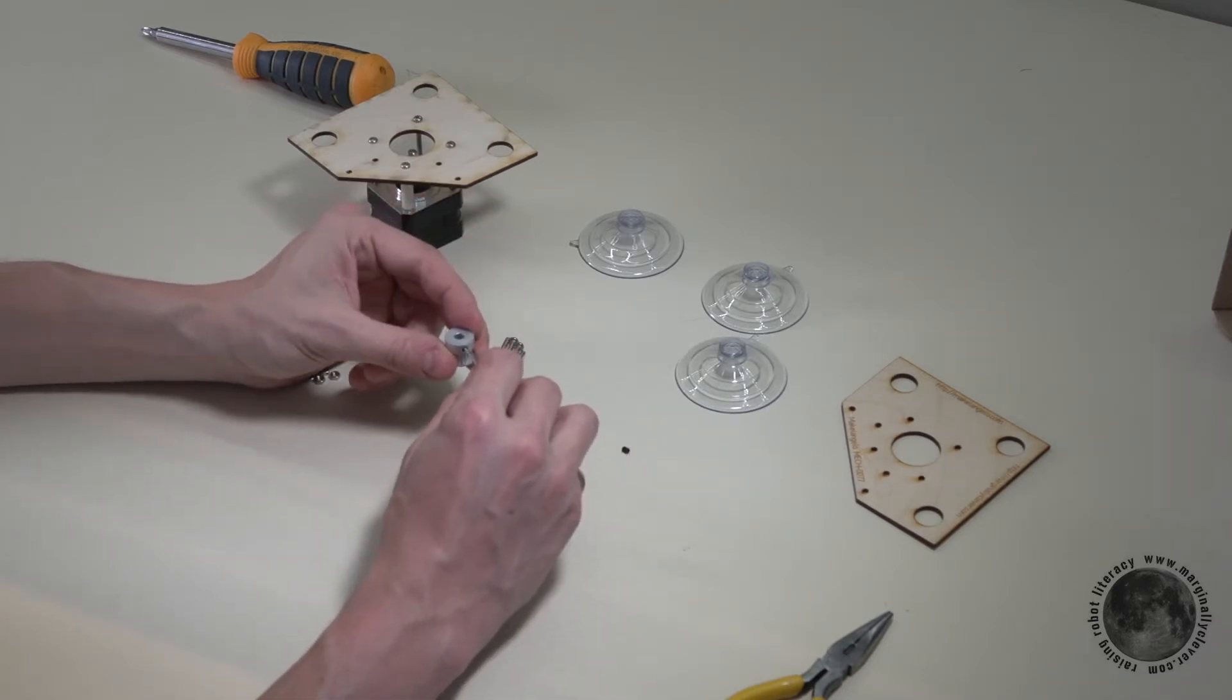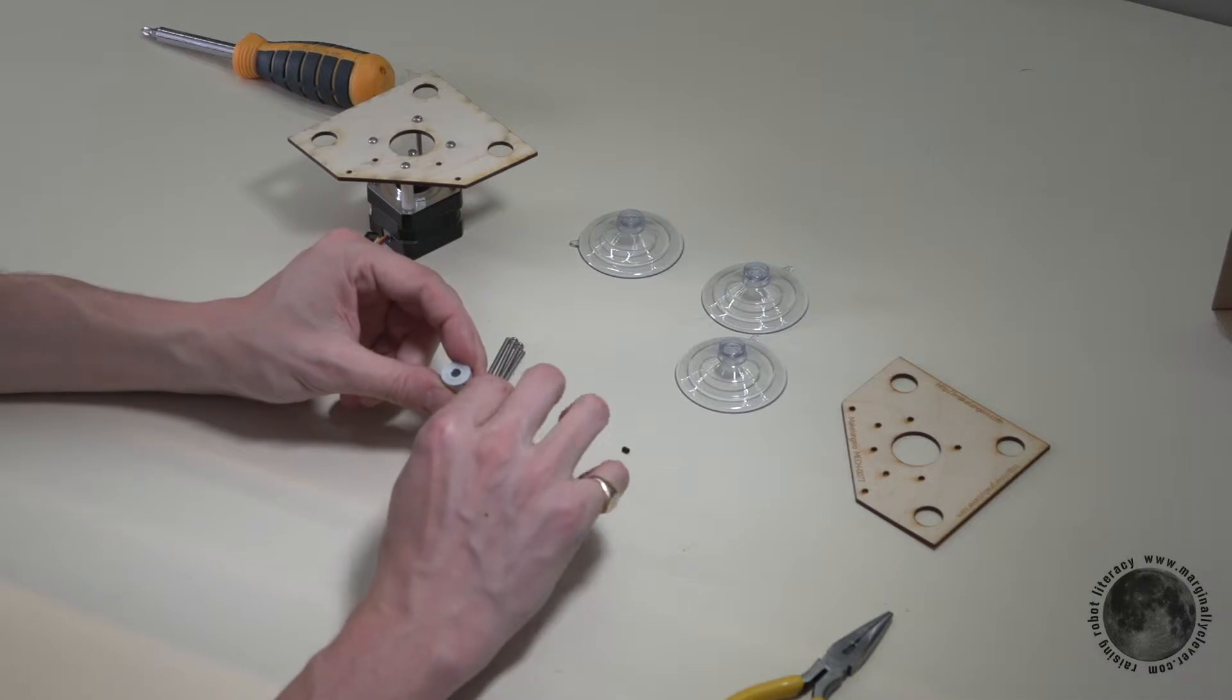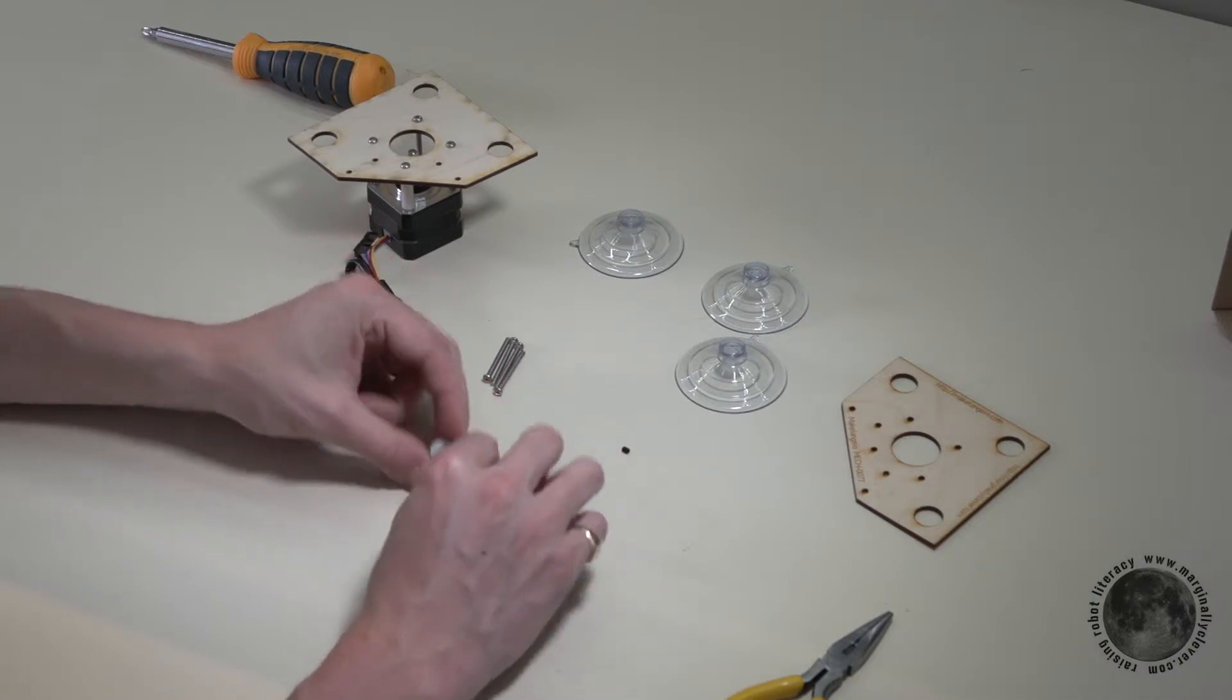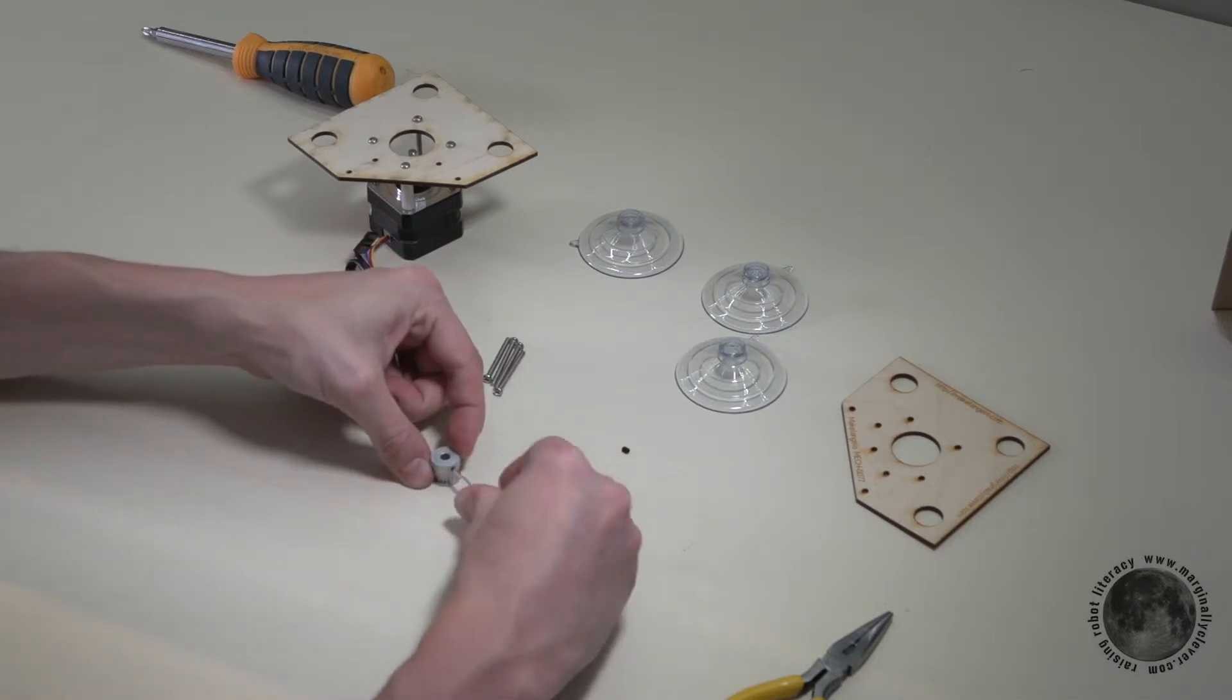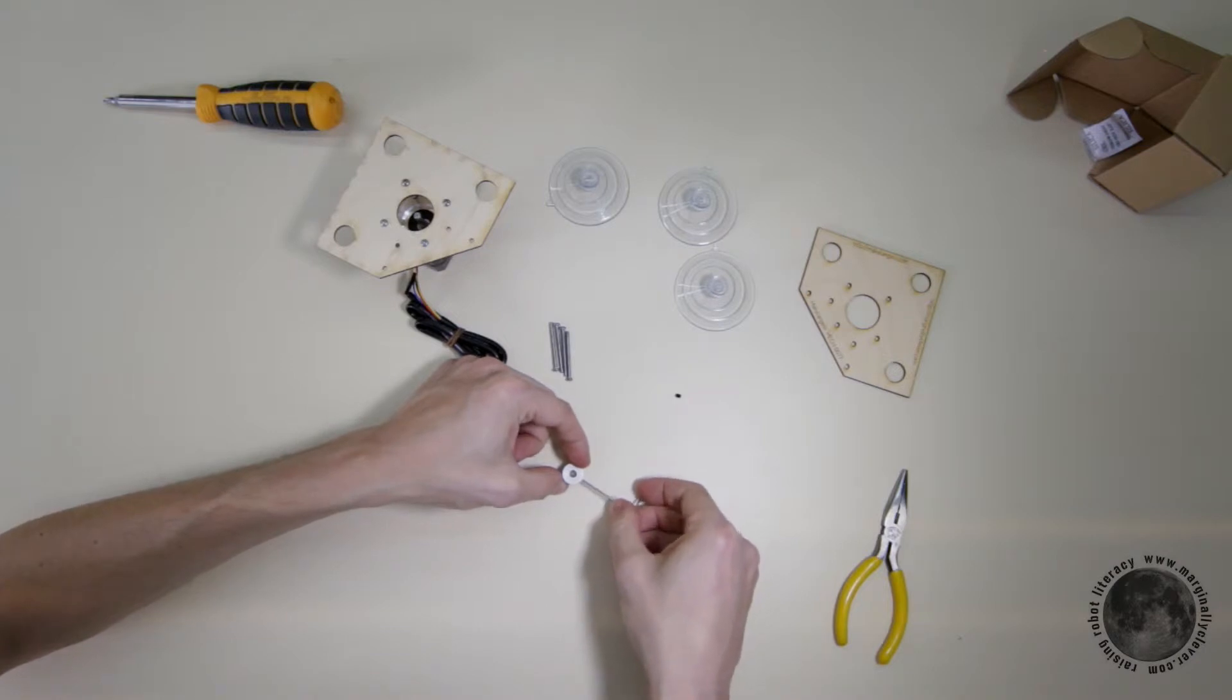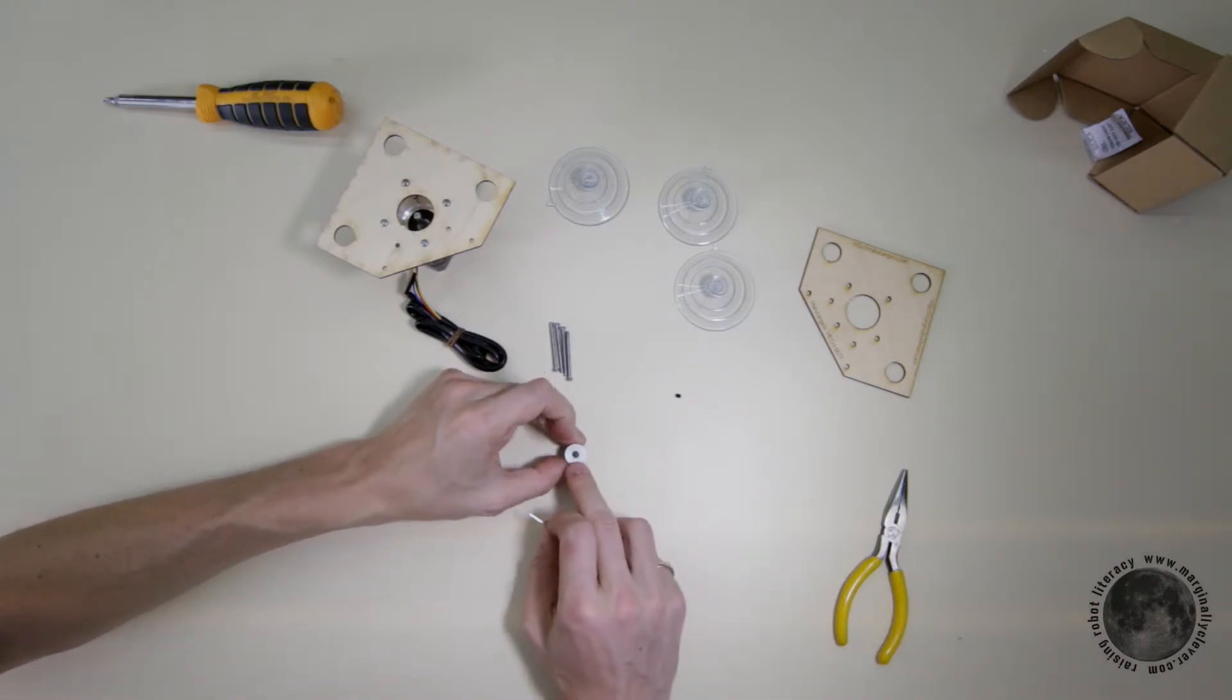If you drive the set screw all the way through, you'll see it in the hole. You should be able to see it there now. You want it backed off just enough so that it's not sticking through the hole.